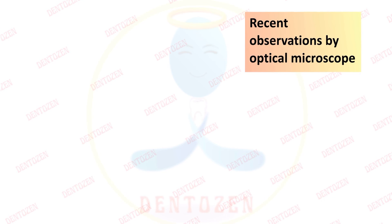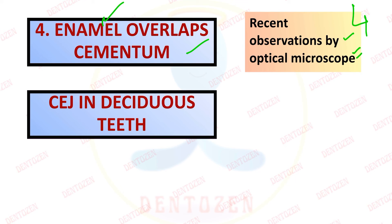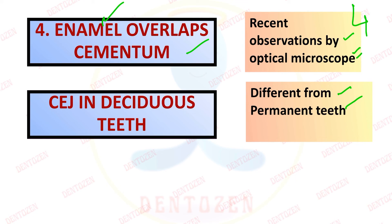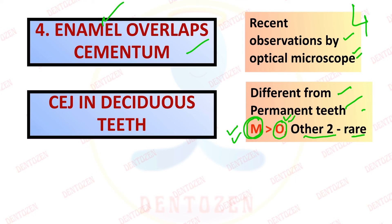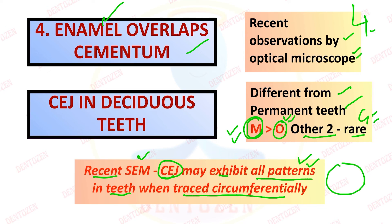Recent observations by optical microscope have revealed a fourth type of junction, where enamel overlaps cementum - but this is a rare occurrence. In deciduous teeth, the CEJ is different from permanent teeth: the edge-to-edge type is more common, followed by overlap, while gap and the fourth type are rare. Scanning electron microscope studies have also revealed that the CEJ may exhibit different patterns when traced circumferentially around the tooth.